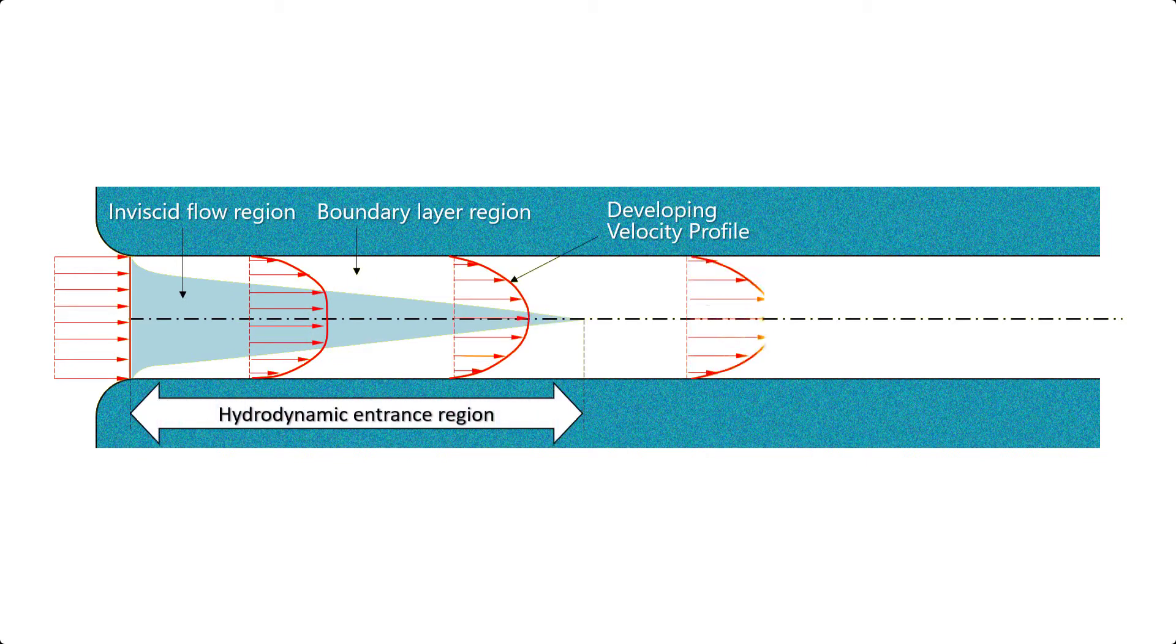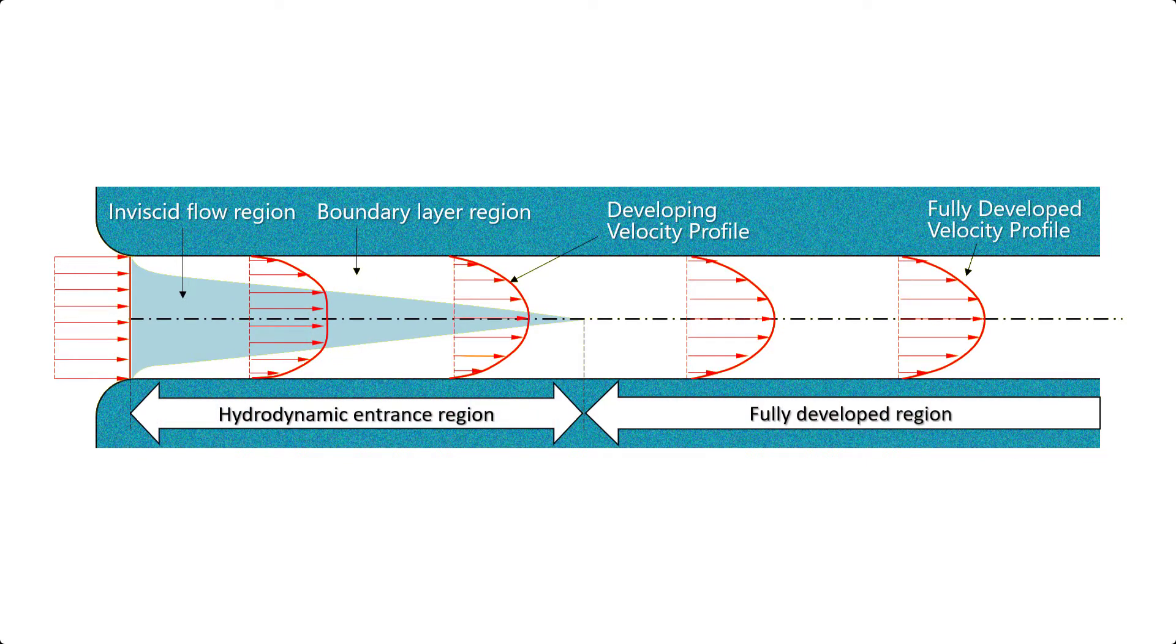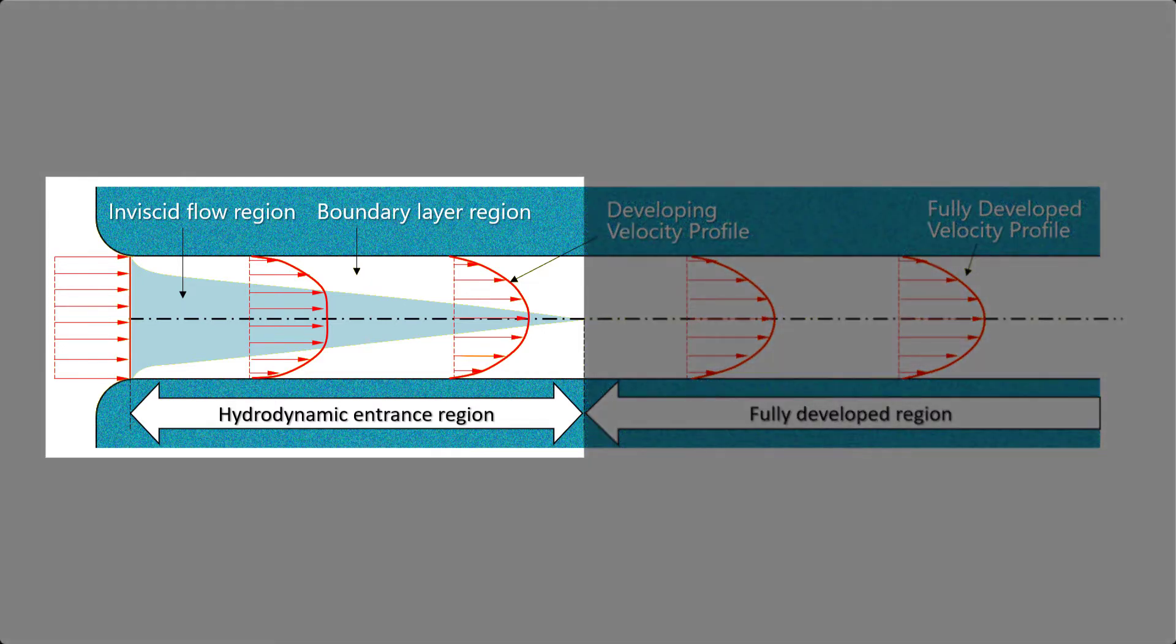A fluid flowing through a pipe invariably enters the pipe at some location. The boundary layer on the walls quickly grows until it reaches the centerline of the pipe and the flow becomes fully developed. The region over which the velocity profile of the fluid changes is called the entrance region.